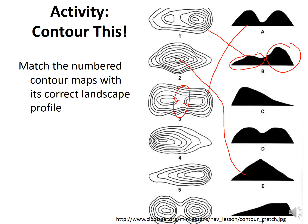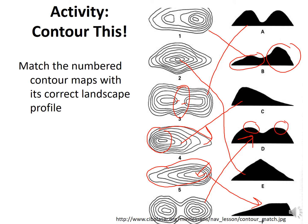Number four is steep on one side then goes gentle — steep to gentle — so that matches one of the remaining profiles. Then we have gentle, then steep with a flat plateau. Now there's one left — it is D. We have two strong hills, two plateaus, but the difference between this one and number three is that the gap here is really small rather than a big gap, which indicates the hills are closer together.